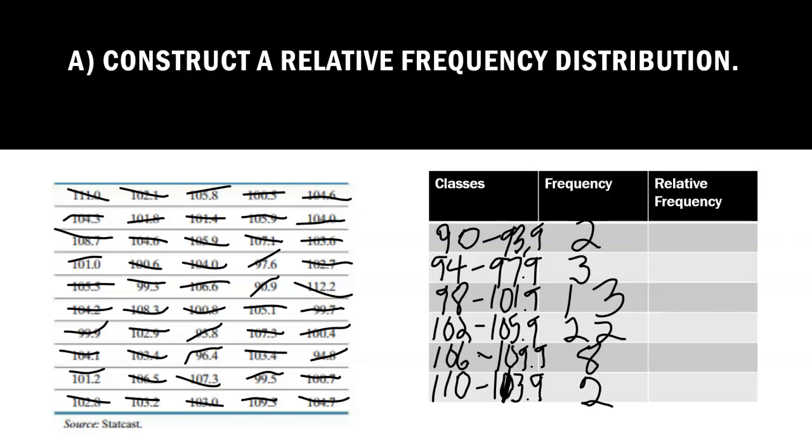The relative frequency is going to be found by taking this number. There was 50 numbers total. There's 10 in each row and there's 5. So I'm going to take each of these numbers and divide it by 50. So here we do 2 divided by 50 and that gives us our relative frequency, which is 0.04.